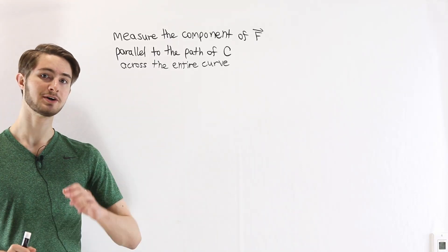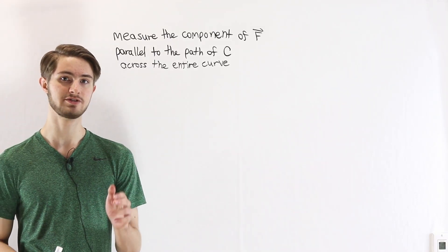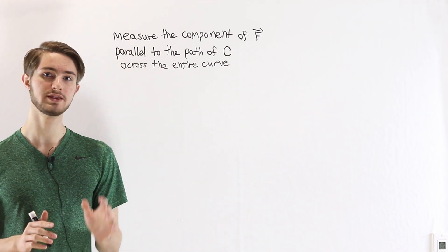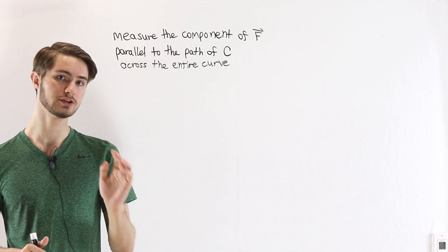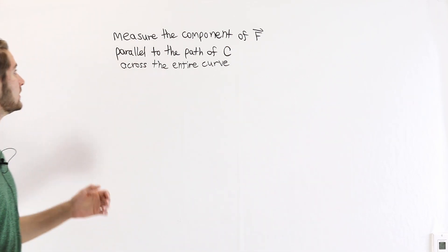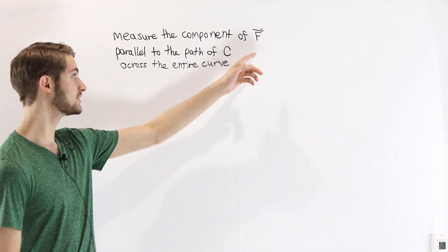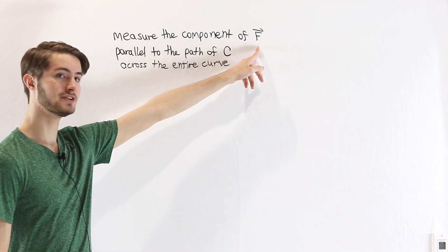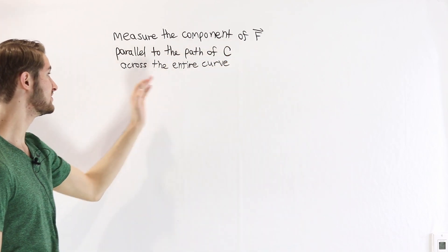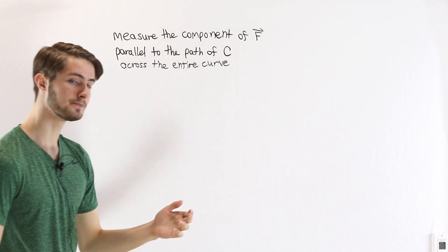We are going to talk about line integrals in a vector field. Here on the board I've written a statement about what the vector field line integral is trying to do. Our goal is to measure the component of some vector field f parallel to the path of our curve c across the entire length of the curve.